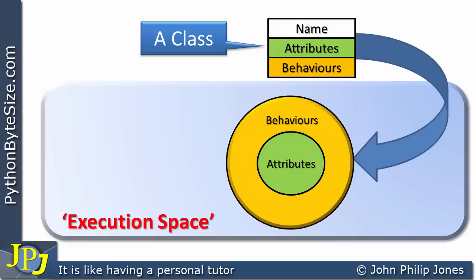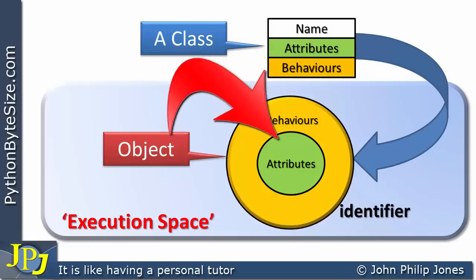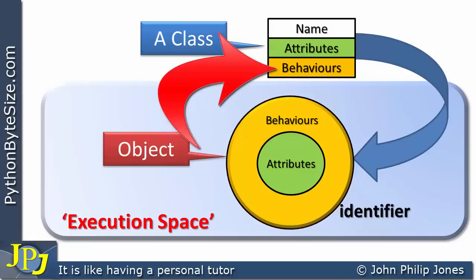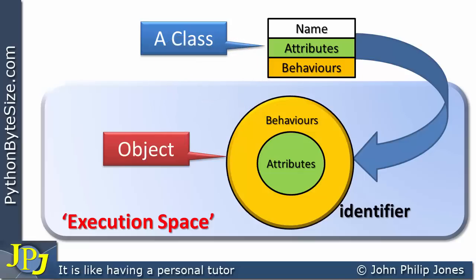Like all objects, we have an instance of the class, and like all objects in the execution space, they're given an appropriate identifier. Whatever attributes are defined in the class appear in the object, and whatever behaviors are defined in the class appear in the object. When they're in the object, they're called instance attributes and instance behaviors. Another word for behaviors in an object is methods.